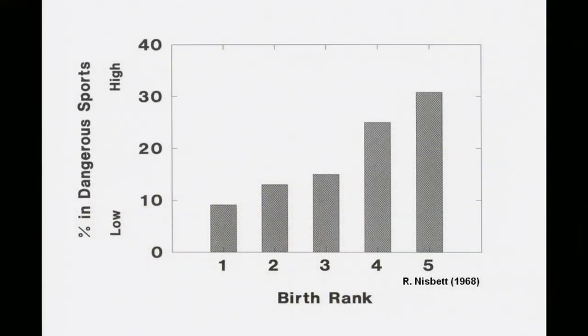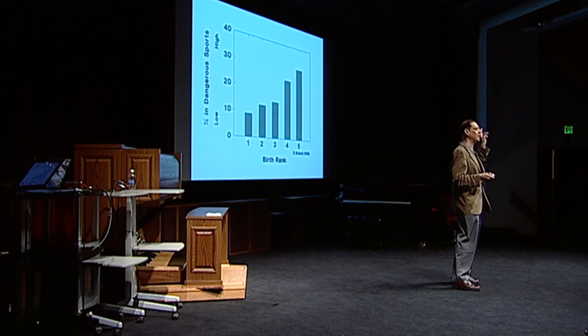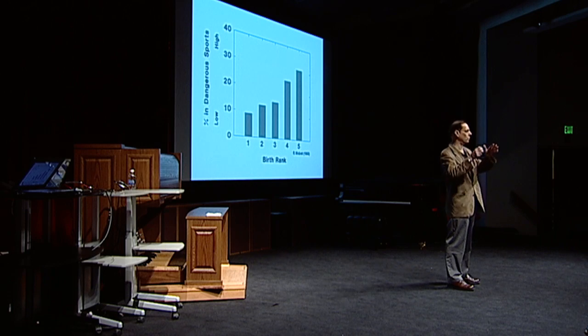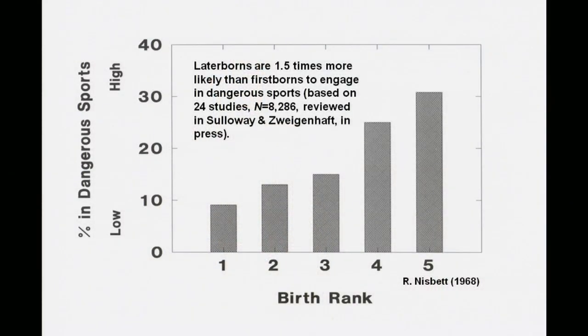I just finished a study with a collaborator where we tested this idea by looking at participation in dangerous sports — pretty much defined as all the sports where you can lose your teeth. That included rugby, American football, soccer, skydiving, bungee jumping, racing cars, bobsled racing, and more. We did a meta-analysis of all known previous studies on this subject and found that younger siblings were 50% more likely to engage in all of these high-risk sports. We then decided to look at a particular sport to see whether we could find differences in specific behaviors.